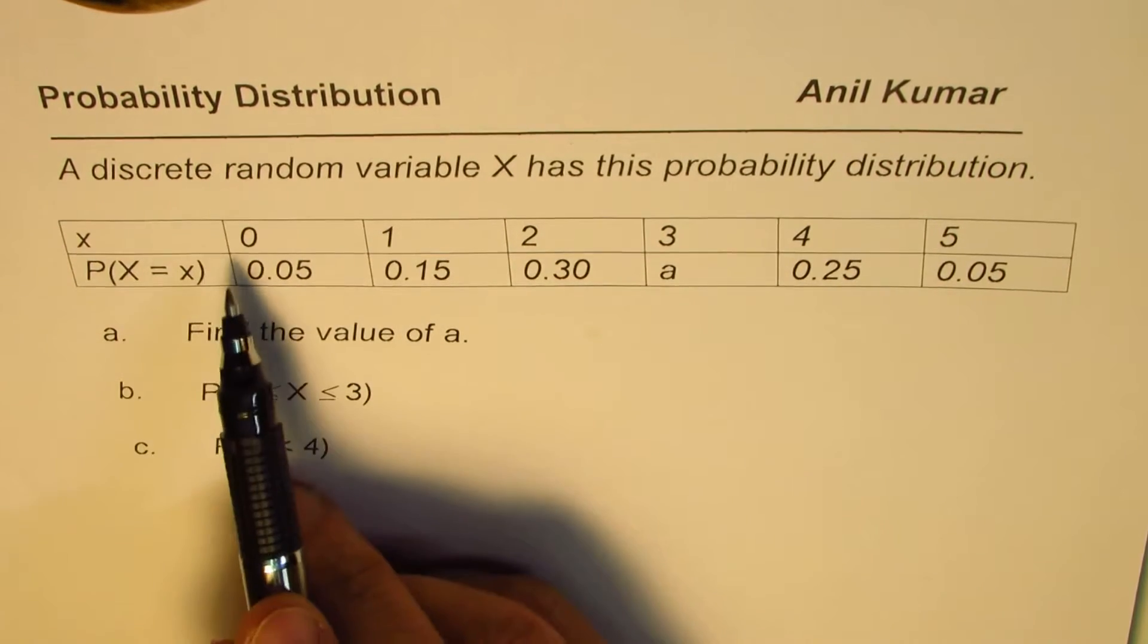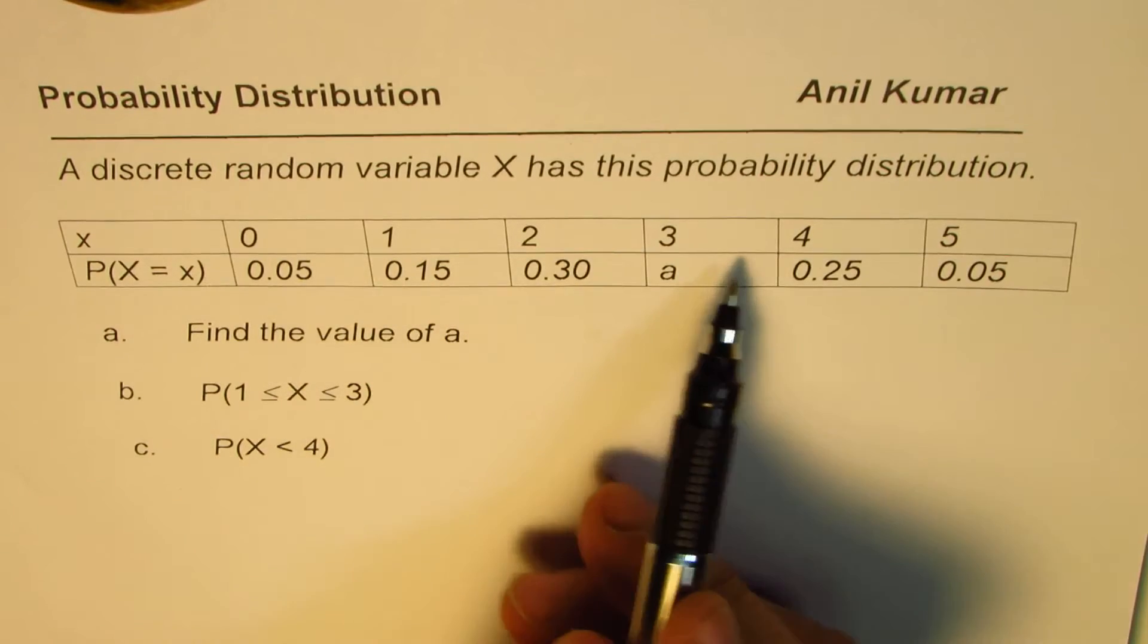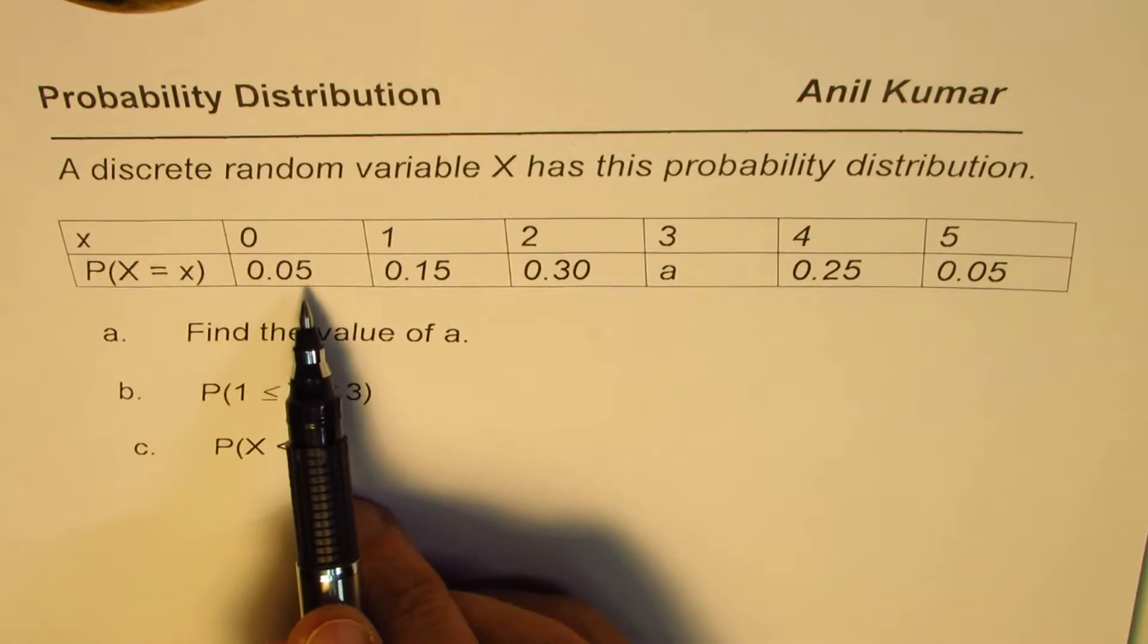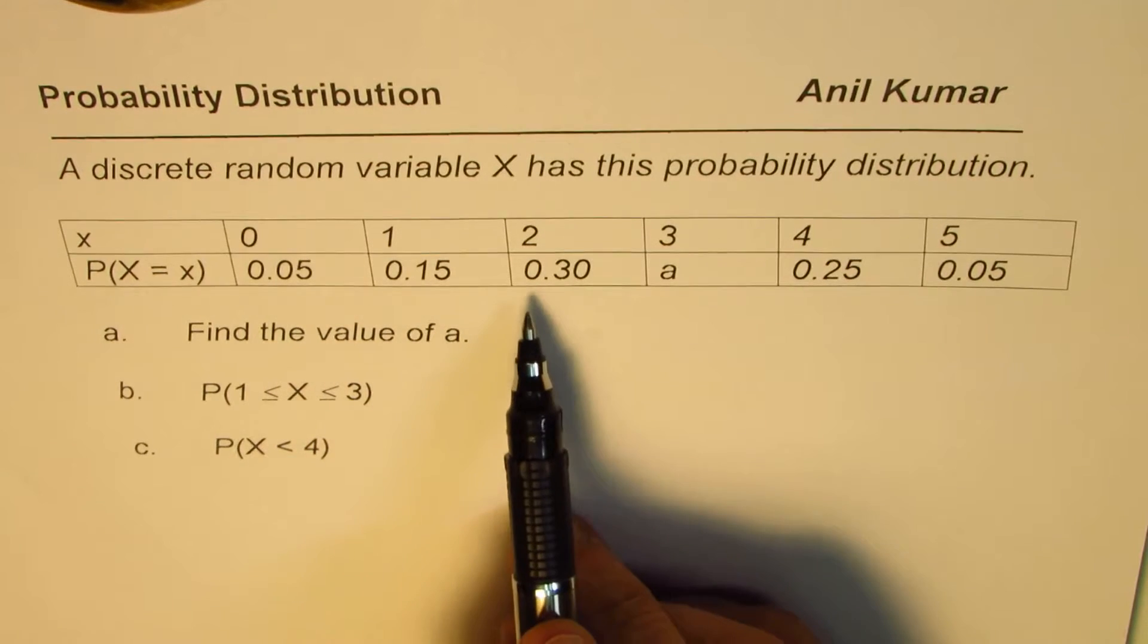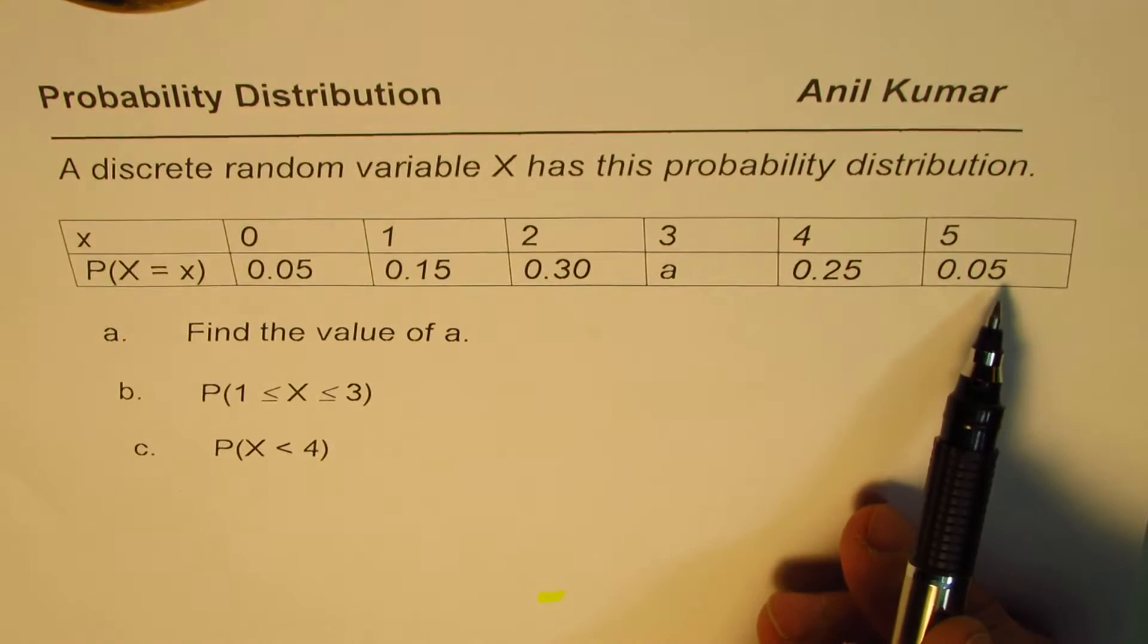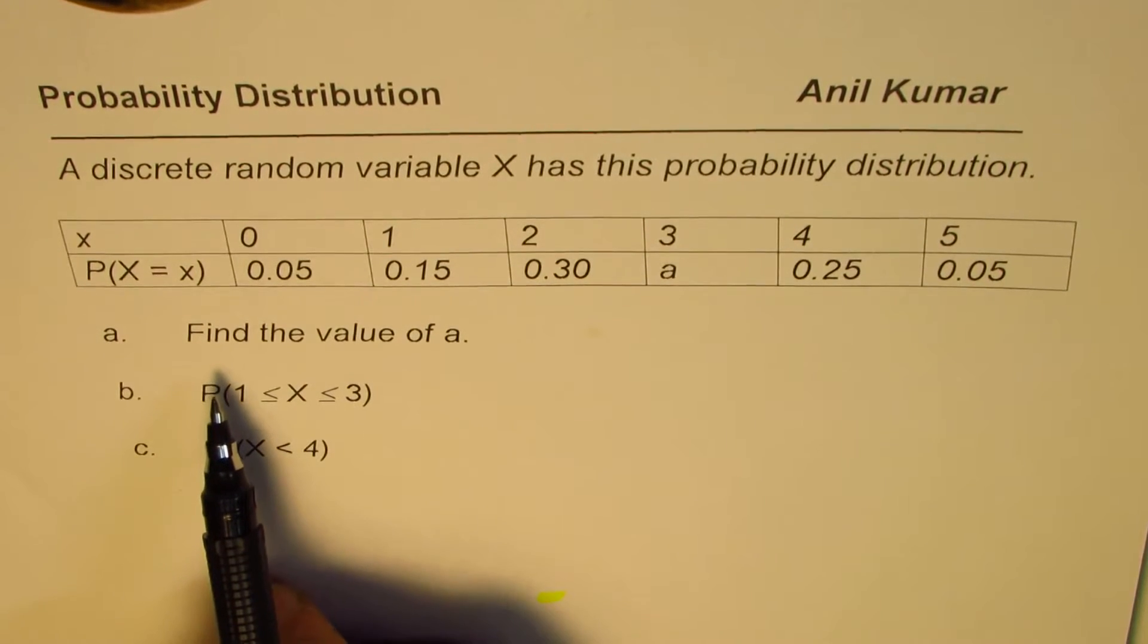So X values, the outputs are 0, 1, 2, 3, 4 and 5 and probabilities for each is 0.05, 0.15, 0.30, a, 0.25 and 0.05.